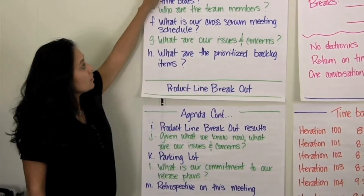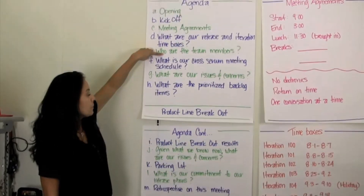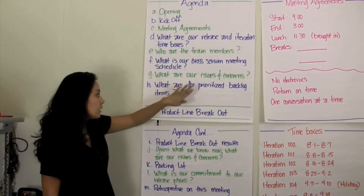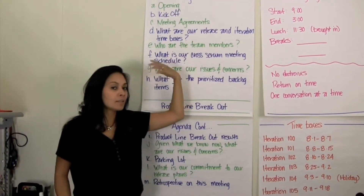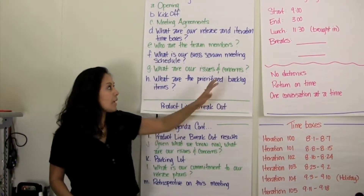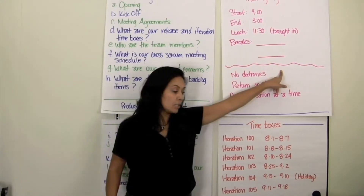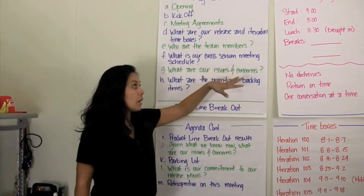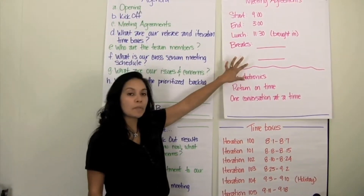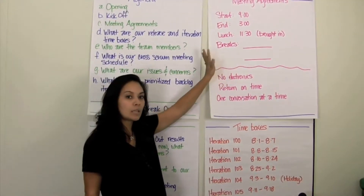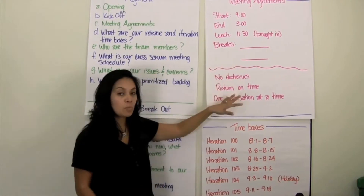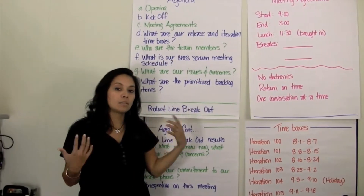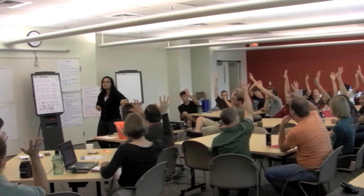We review the meeting agreements, time boxes, team members, our class-from-schedule meeting, and any issues and concerns. I create these ahead of time and have them on charts — meeting agreements, time boxes, and so on. As I go through each of the agenda items, I bring up the chart, talk about them, document any required changes on the chart, and move on. It's important that as we go through the agenda, the team is on the same page and in agreement.